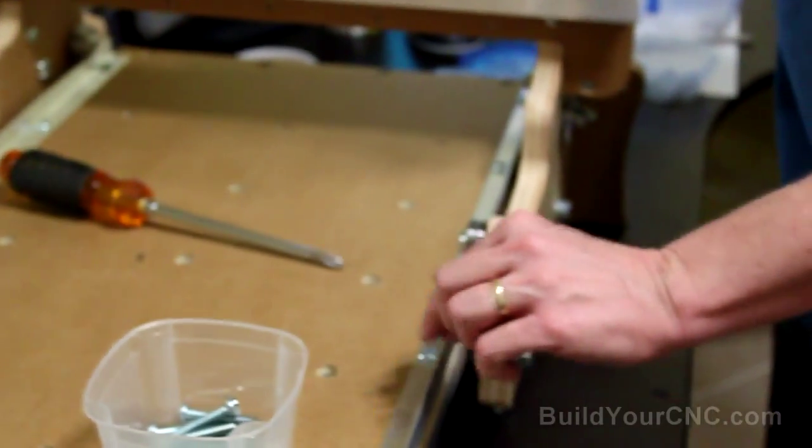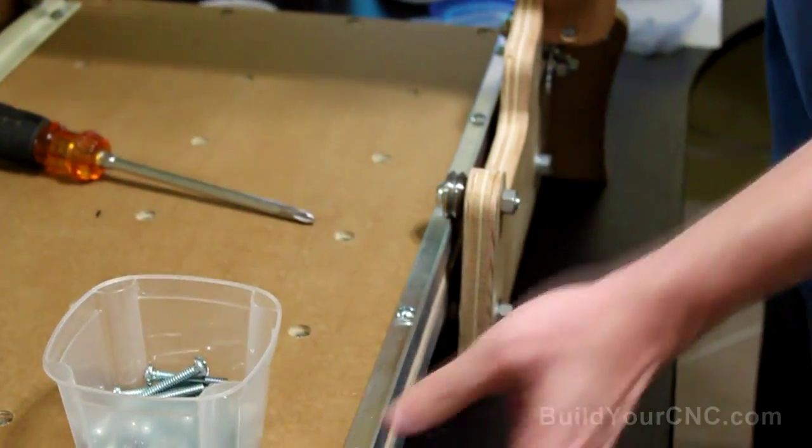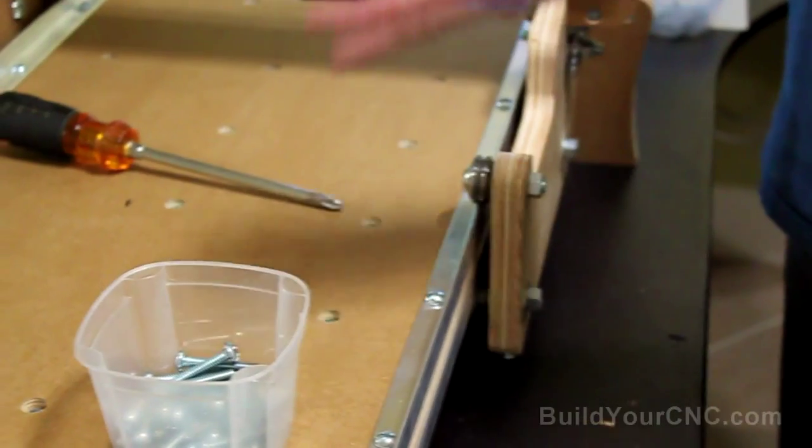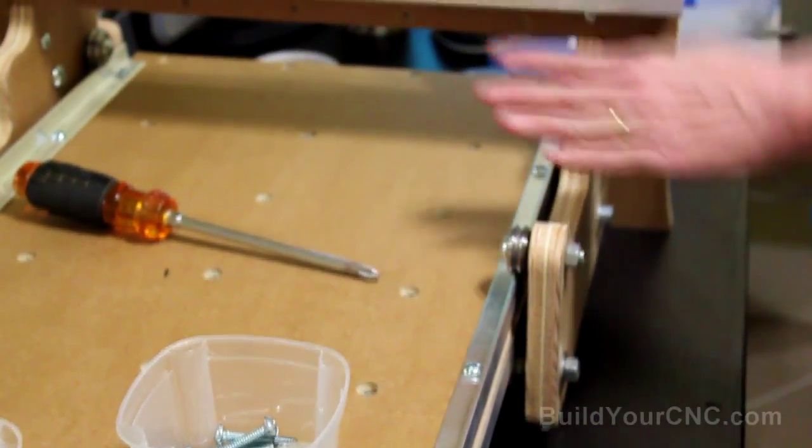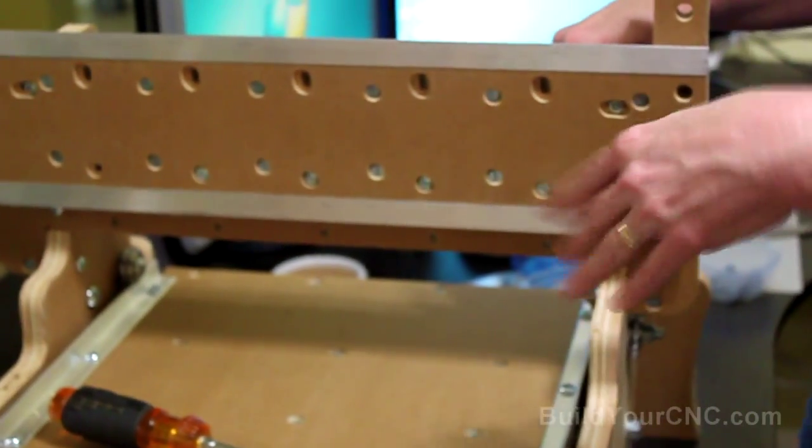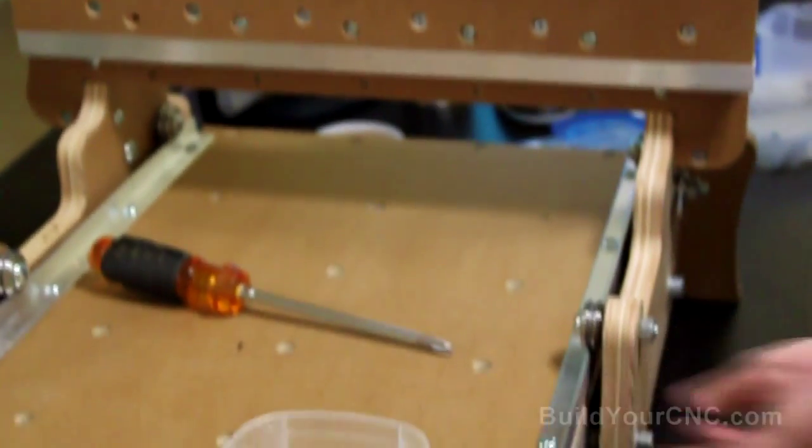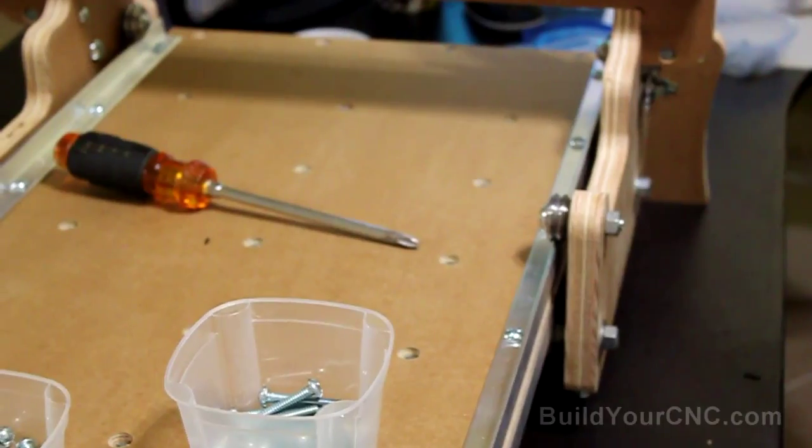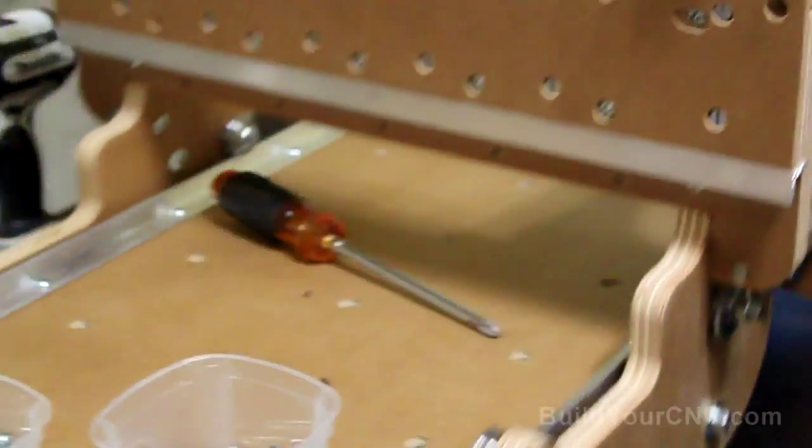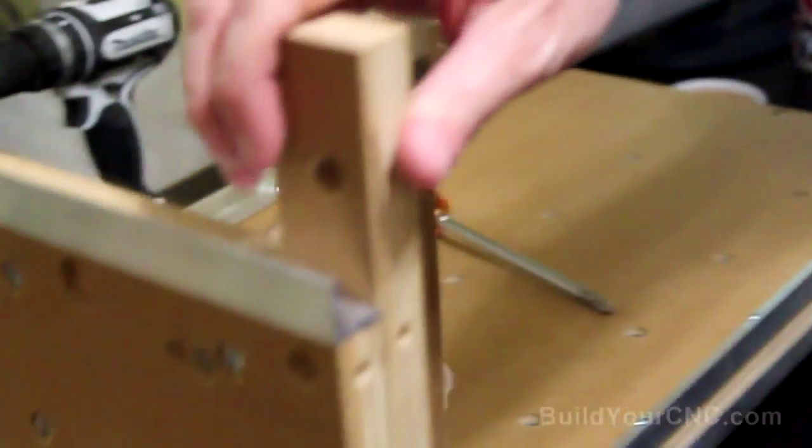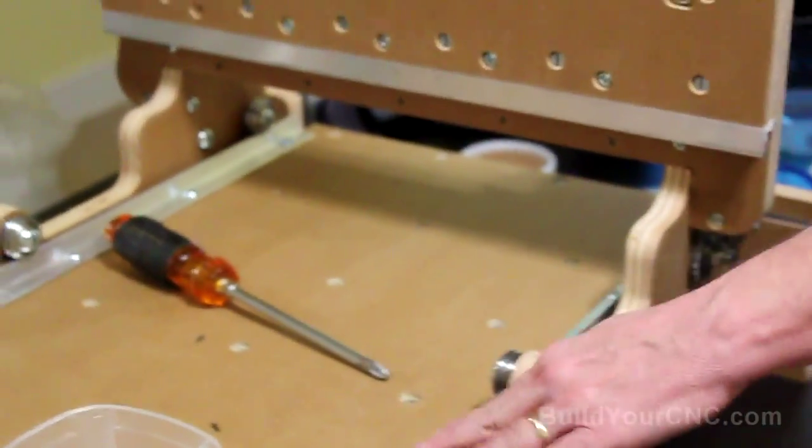Okay, we're going to be taking the rails and tightening the rails down to the table. And this really can be done almost at any step after you get the gantry sides on and this is on. Any step afterwards you can actually do this. The first thing you want to do is make sure that you run this back and forth a few times to get these a little bit settled.